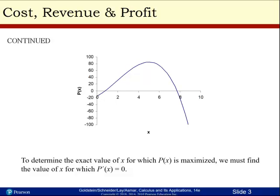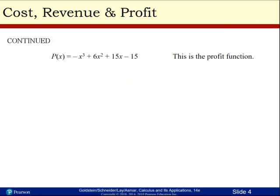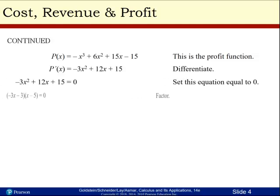Here's our profit function. We're going to take the derivative. When we do, we find that the derivative equals negative 3x squared plus 12x plus 15. We'll set it equal to 0, solve it for x, and we will get that x can either be negative 1 or 5.